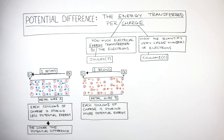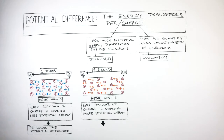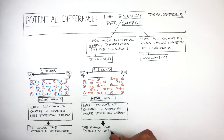That just means, in simpler terms, if there is a low potential difference, the electrons are transferring less electrical energy. Whereas in metal wire B, each coulomb of charge is storing more potential energy, so the higher the potential difference.